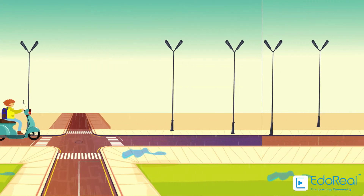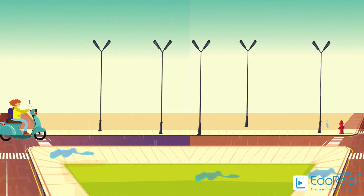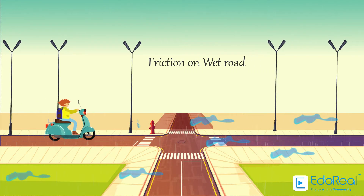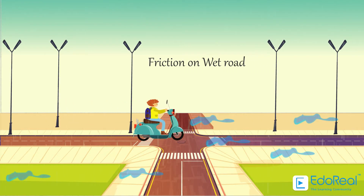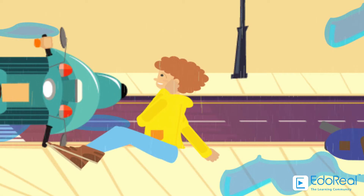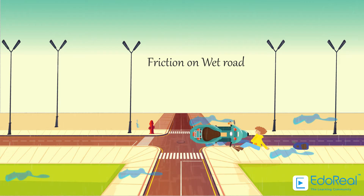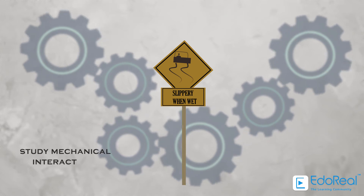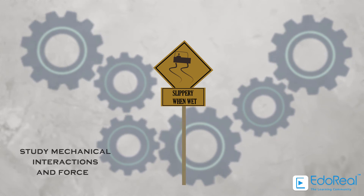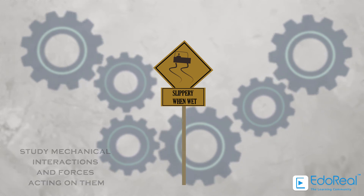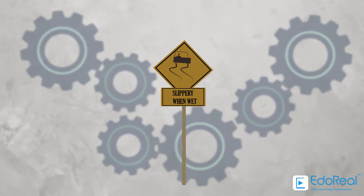Let's imagine driving a bike on a wet road. As the force of friction which holds the bike will be low on wet roads, we may fall down. It is better if we study mechanical interactions between different bodies and the effect of forces acting on them, so that we can avoid such mishaps.